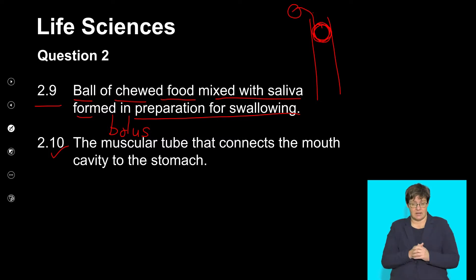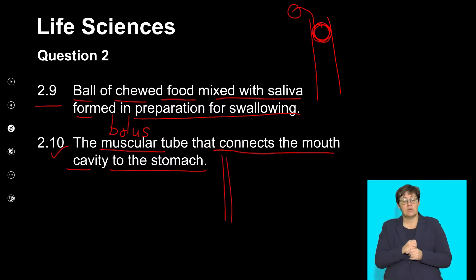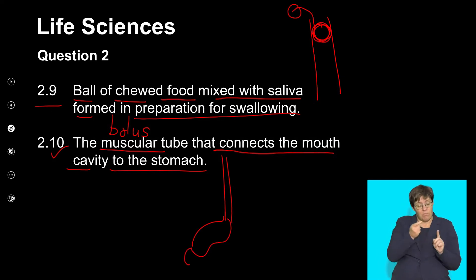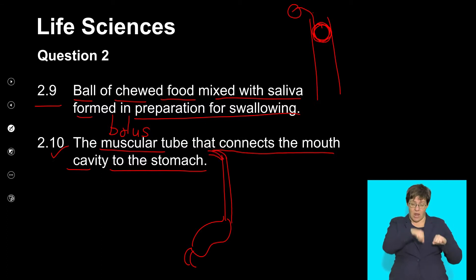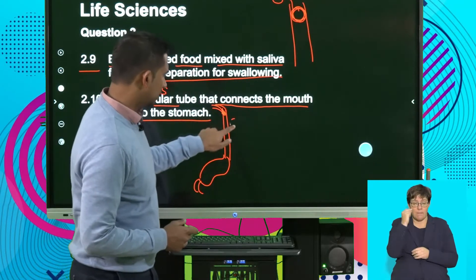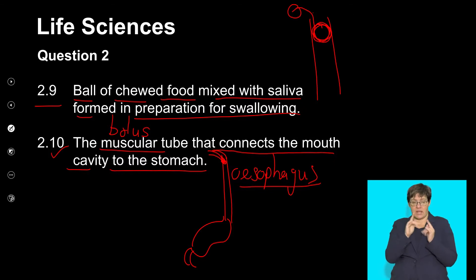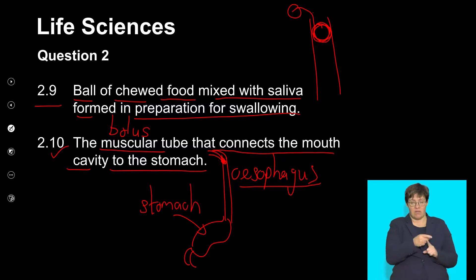2.10: The muscular tube that connects the mouth cavity to the stomach. We have a tube that transports the food all the way to the stomach before it moves into the small intestine. That tube through which food moves is called the esophagus — the first part of the alimentary canal that connects the mouth to the muscular stomach. That's a wrap for looking at terms.